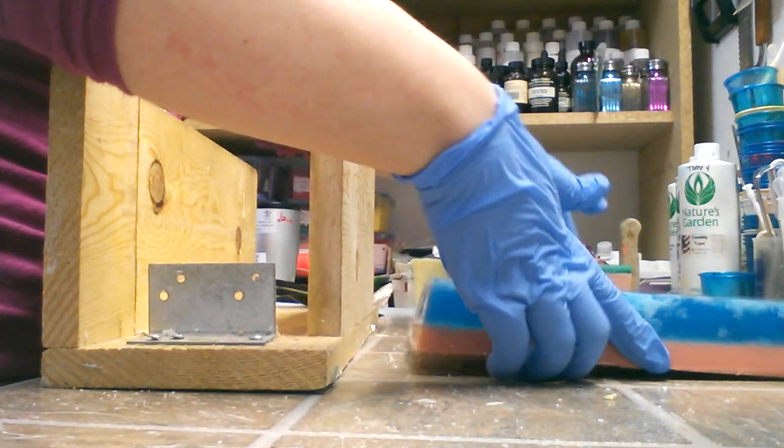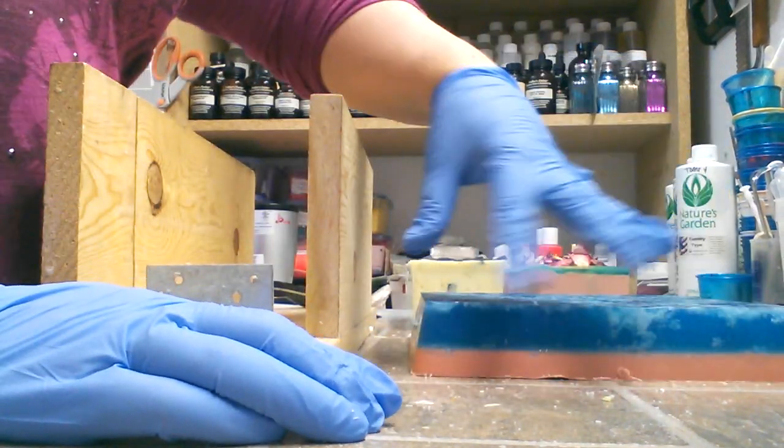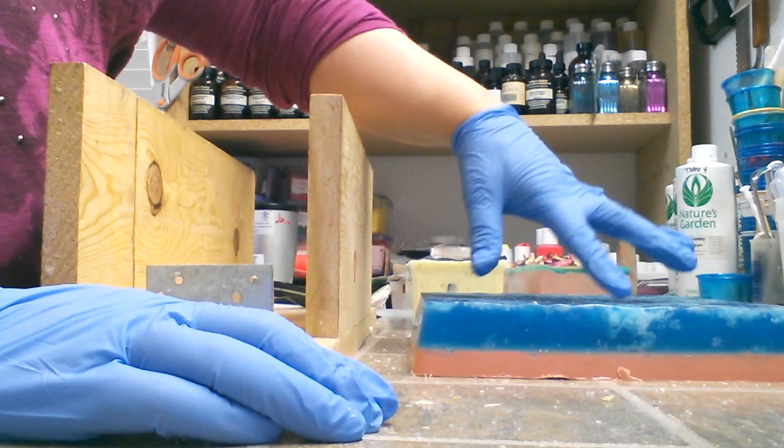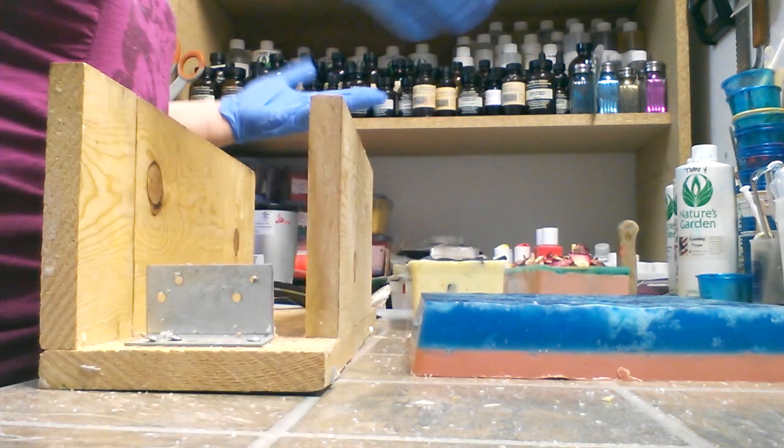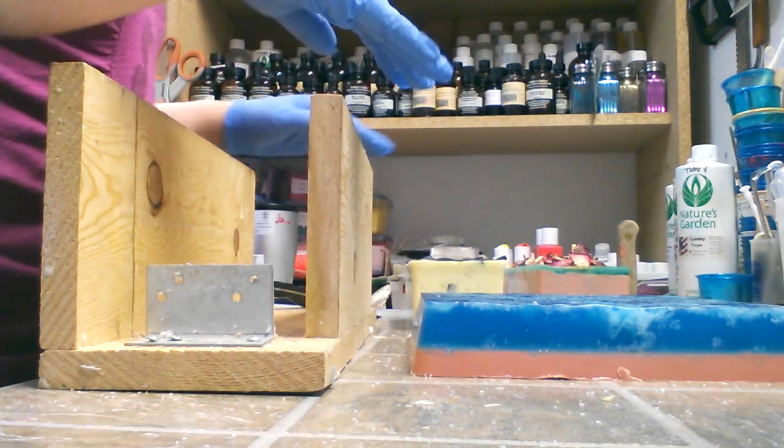So this one is my Tommy Hilfiger salt bar. I do it in a slab mold and I try to do the red, white and blue rustic with the salts, kind of like clouds in it, but I won't cut that one because that'll be boring for you guys to see.